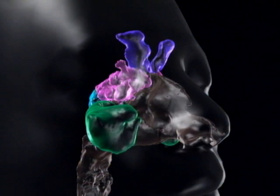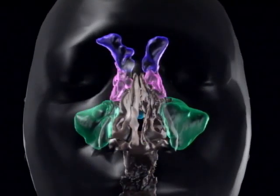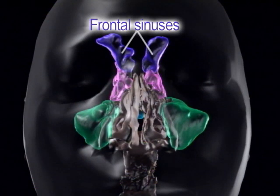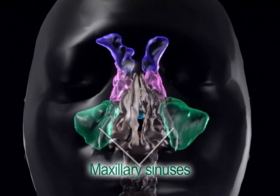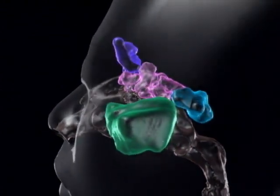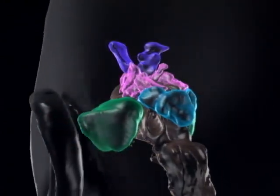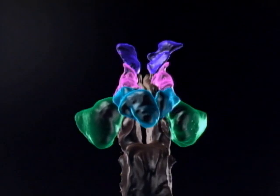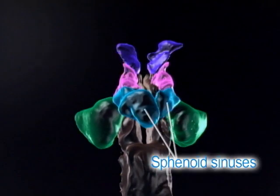There are four paranasal sinuses on either side of the face: the frontal sinuses, maxillary sinuses, ethmoid sinuses, and sphenoid sinuses.